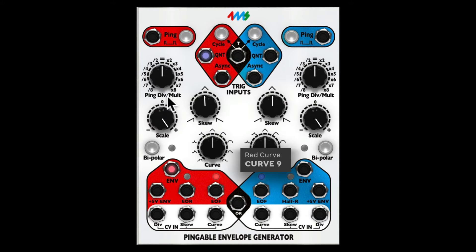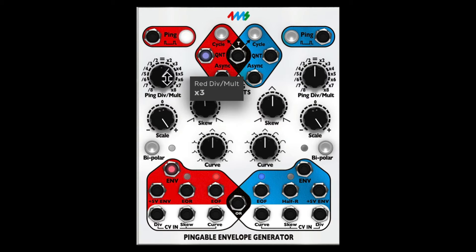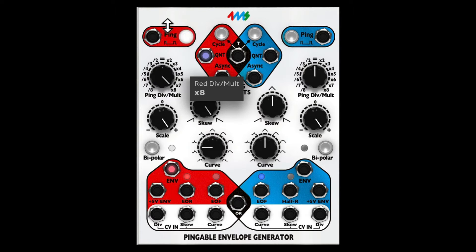Another option we have is ping division and multiplication. Right now in equal mode we're following the rate or length defined by the ping. But I can double it up for double time, three times as fast, four times as fast, and so on. On the left side we have the division option — now it's twice as long, three times as long, and so forth.